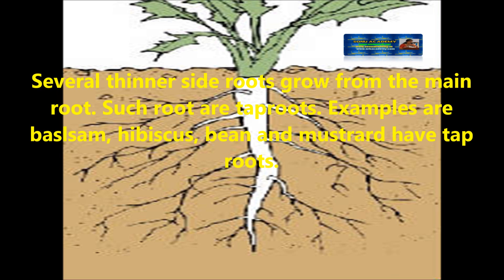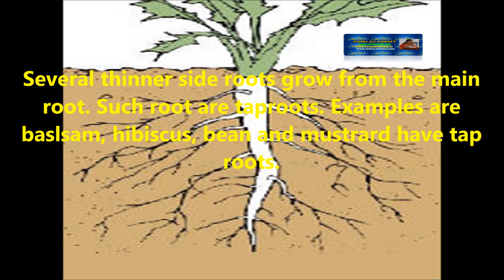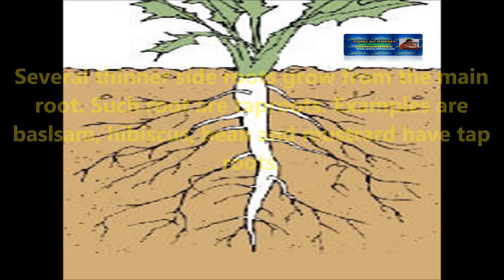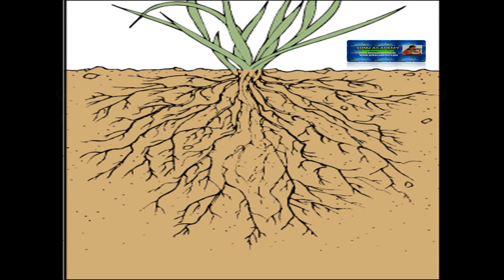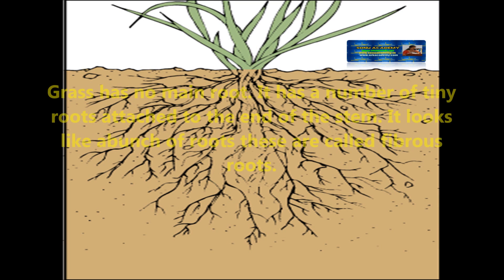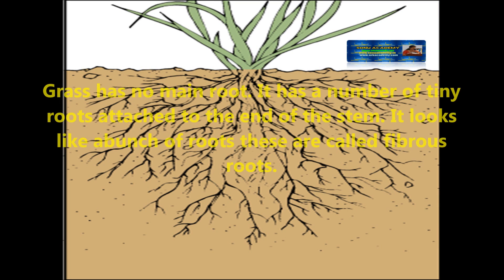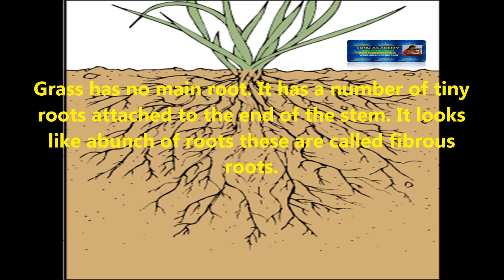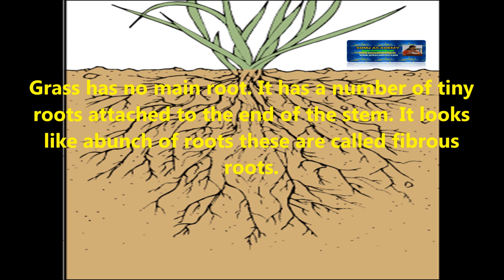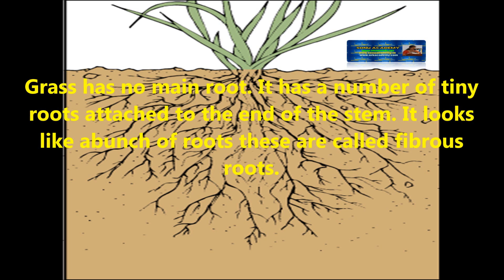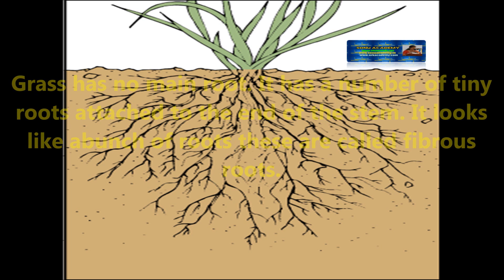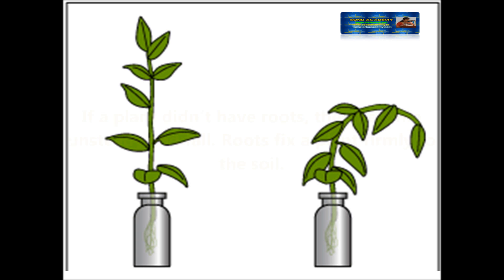Examples of plants with tap roots are hibiscus, bean, and mustard. Grass has no main root. It has a number of tiny roots attached to the end of the stem. They look like a bunch of roots, and these roots we call fibrous roots.